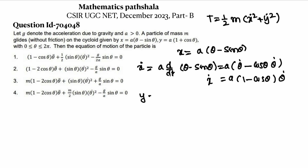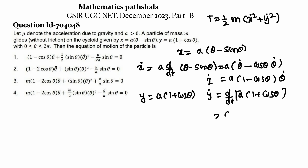Now y = a(1 + cosθ), so ẏ will be d/dt of a(1 + cosθ). From here we get a(-sinθ · θ̇), so ẏ = -a sinθ · θ̇.